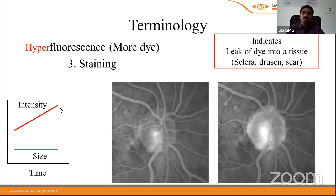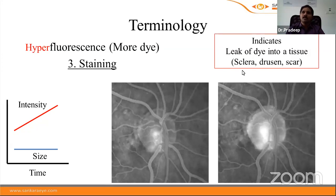Staining is also characterized by increase in intensity of hyperfluorescence over time with the size remaining constant. For example, the edge of the optic nerve head shows an increase in intensity while the size stays similar. This is similar to pooling, but we call it staining when the leak of dye is into a tissue rather than a space. Tissues that show staining include sclera, choroid, drusen, and chorioretinal scars.